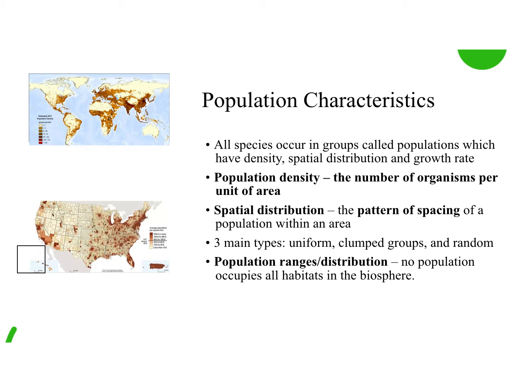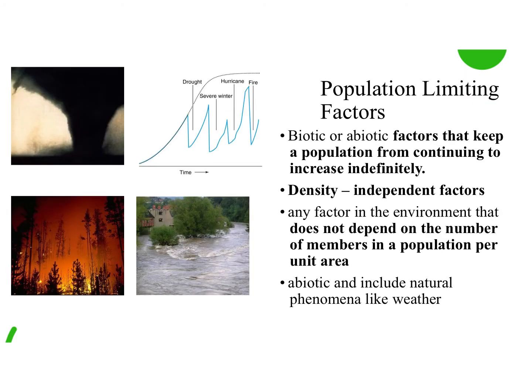They also look at population ranges, or distribution — that is just where specifically you would find this population on Earth. There's not a single population that occupies all the habitats on our planet. Populations settle down in areas where their adaptations thrive. If it's an area you're not adapted for, your population isn't going to be there.